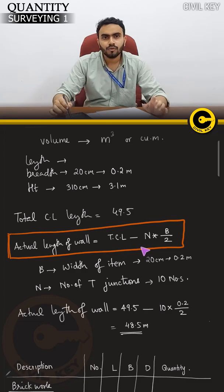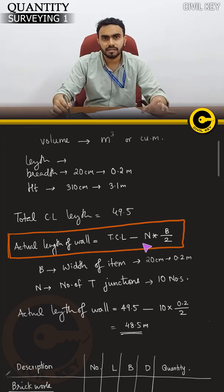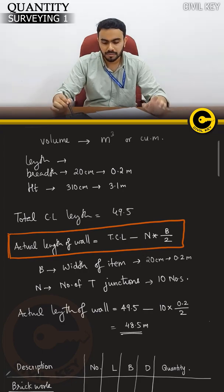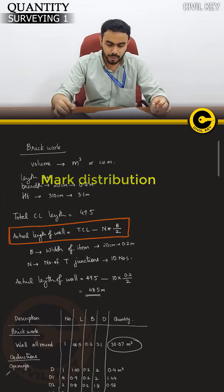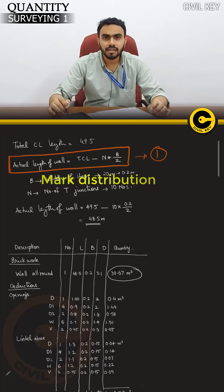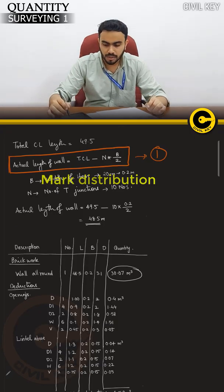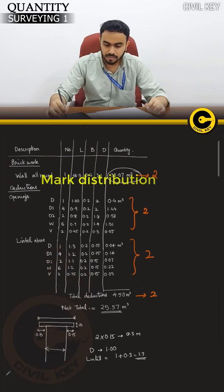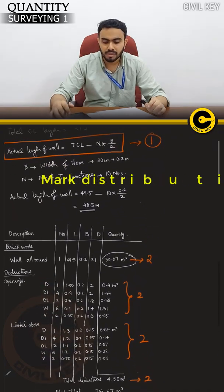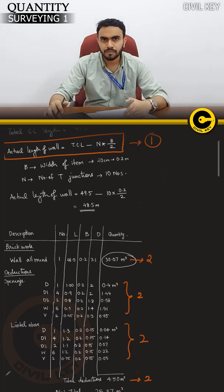The actual length of wall equals total centerline length minus n into b by 2. The number of T-junctions n equals 10, and wall width b equals 0.2 meters. Step 1 is actual length of wall — 1 mark. Step 2 is total quantity — 2 marks. Then deductions for openings, lintels, and the final answer. Step-wise solution for full marks.